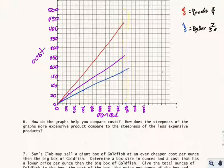It says: how does the steepness of the graph's more expensive product compare to the steepness of the less expensive product? Obviously the more expensive product is the 9-pack, while the less expensive is the big box. How does the steepness of that graph change?